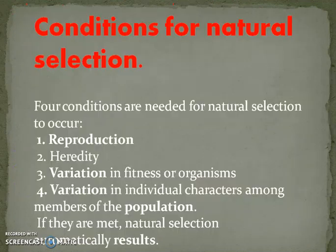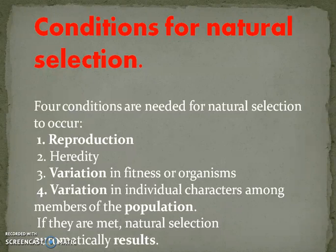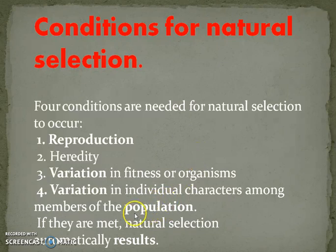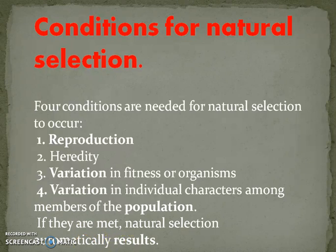Our last topic is the conditions for natural selection. Four conditions are responsible for natural selection to occur: first is reproduction; second is heredity in variations; and variation in fitness among members of the population. Variation at the organism level and at the population level are both important. If these conditions are met, natural selection automatically results.